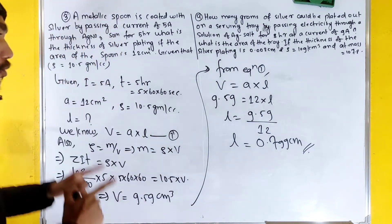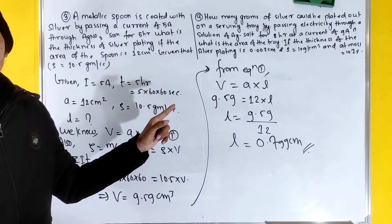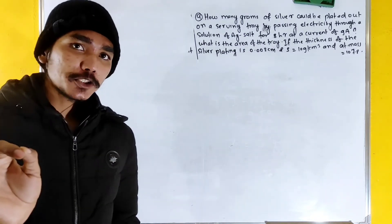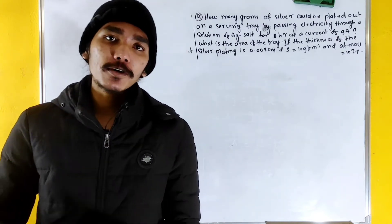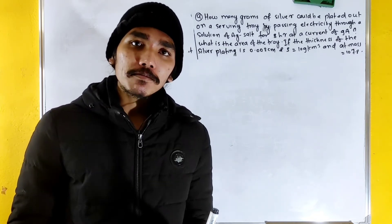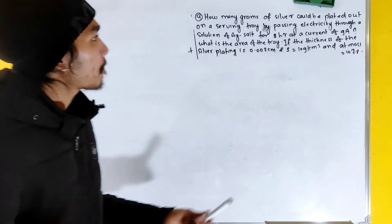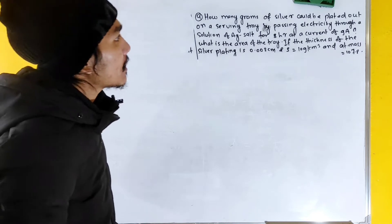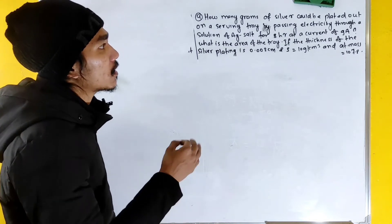Now we are going to take question number 3: How many grams of silver could be plated out on a serving tray by passing electricity through a silver salt solution for 8 hours at a current of 9 ampere?